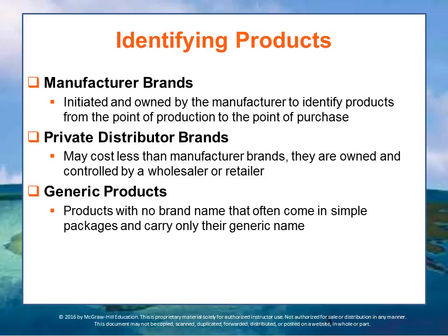The two major characteristics of brands are manufacturer brands and private distributor brands. Manufacturer brands are brands initiated and owned by the manufacturer to identify products from the point of production to the point of purchase. Kellogg's, Sony, and Texaco are examples of these.